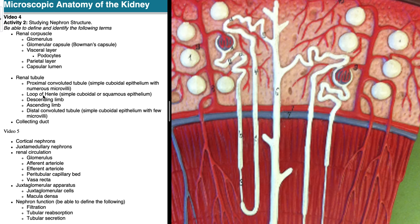The loop of Henle can be further broken into its descending limb and ascending limb. The descending limb is on the side closer to Bowman's capsule and the glomerulus. The proximal convoluted tubule connects to the descending limb of the loop of Henle; the ascending limb then connects to the distal convoluted tubule, which in turn connects to the collecting duct.